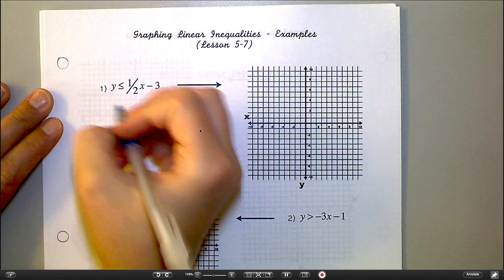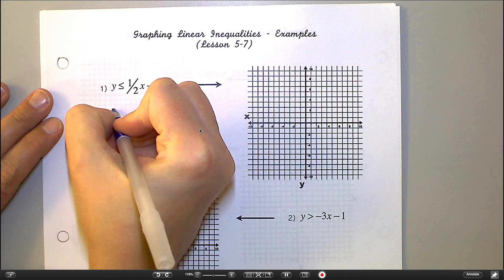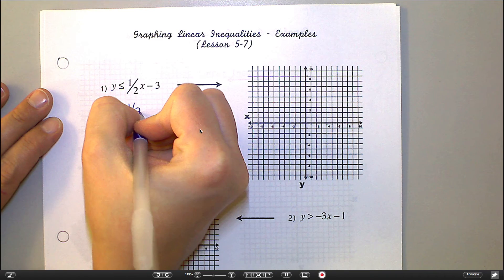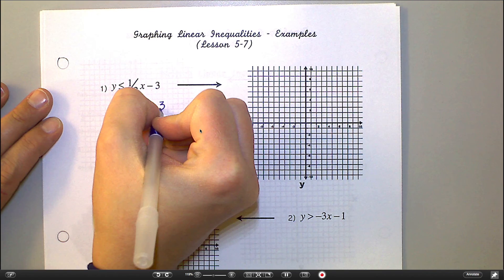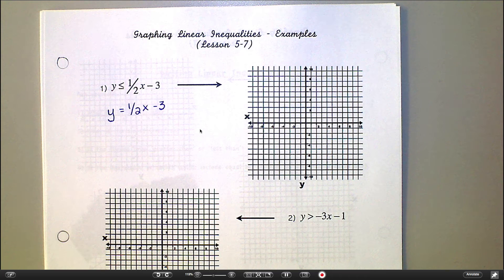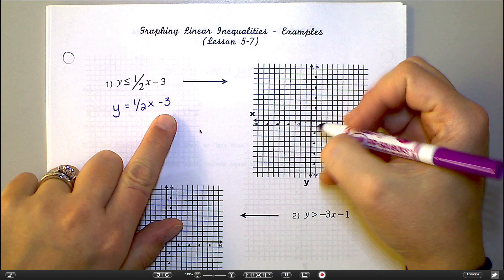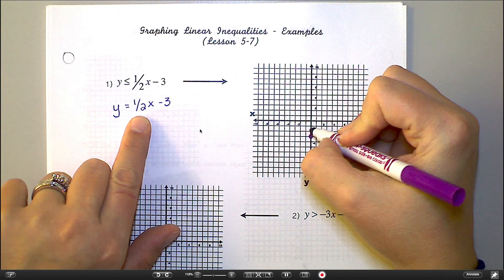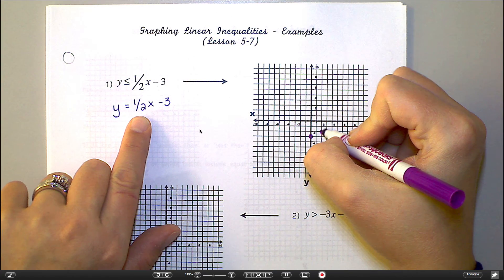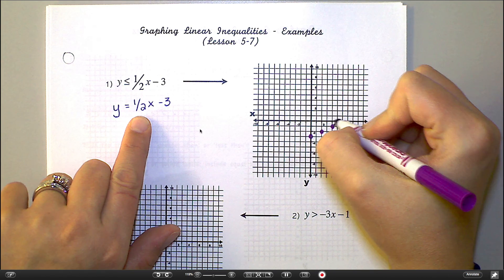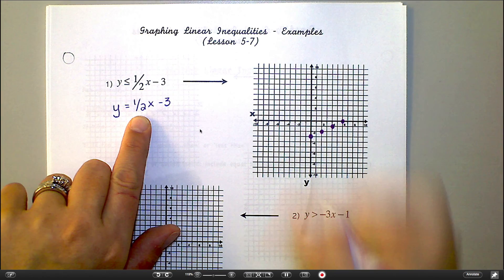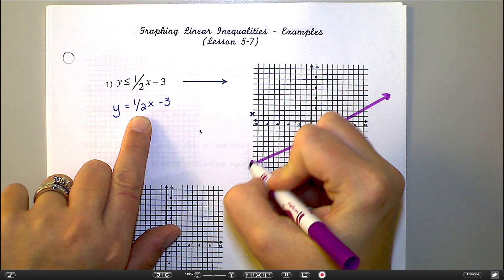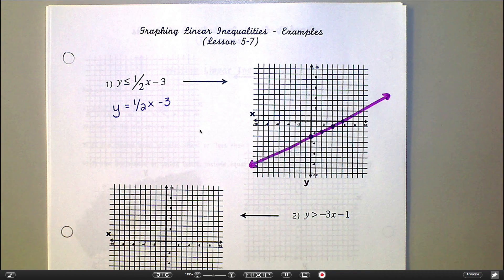So this first one, I want you to imagine that instead of that less than or equal to, imagine this just said y equals 1/2x minus 3. And think about how we would graph that. Well, we would start at our y-intercept, which is negative 3. My slope is telling me to go up 1 and over 2, up 1 and over 2, do that a couple of times, and then I would just draw my line to connect those dots. So that is all stuff that you already knew how to do.